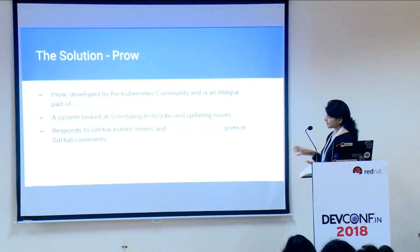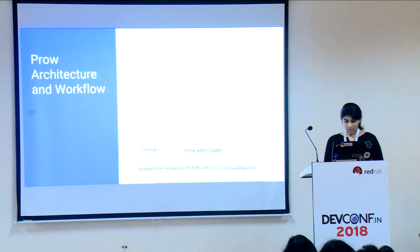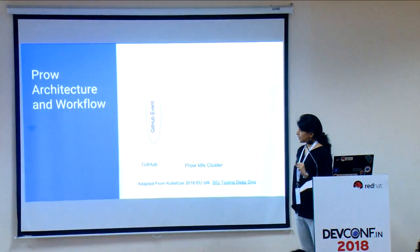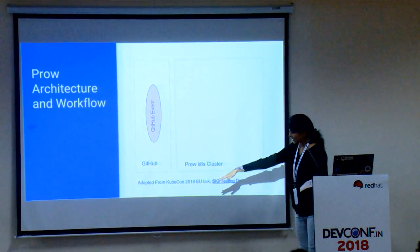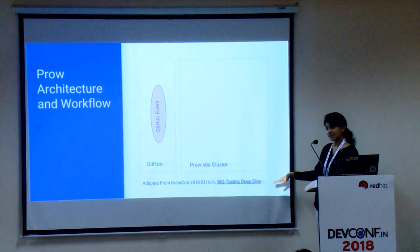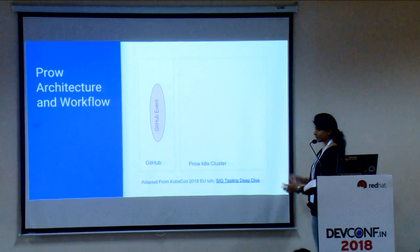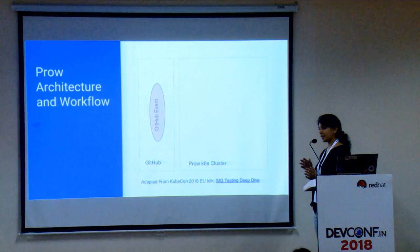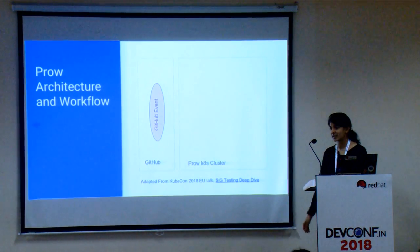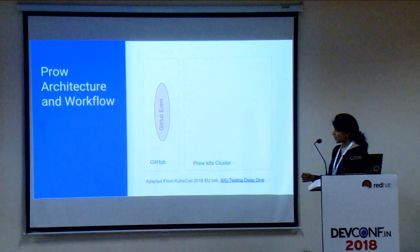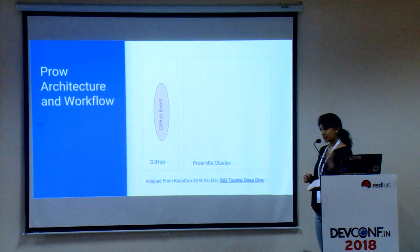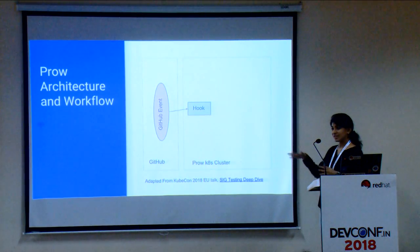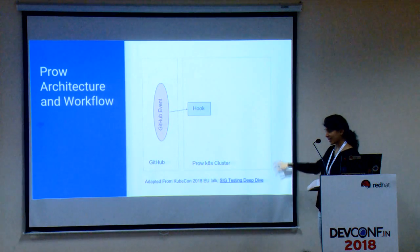Next I'll go through the flow of how it does this. It is very integrated — it listens to the GitHub webhooks. So there's GitHub on one side and on the other side you have a Kubernetes cluster which has your entire Prow setup. Whenever you trigger any event, like adding a command such as 'test' or 'run test', or commands to add labels, that event is triggered on GitHub and through webhooks it goes to the Hook server.